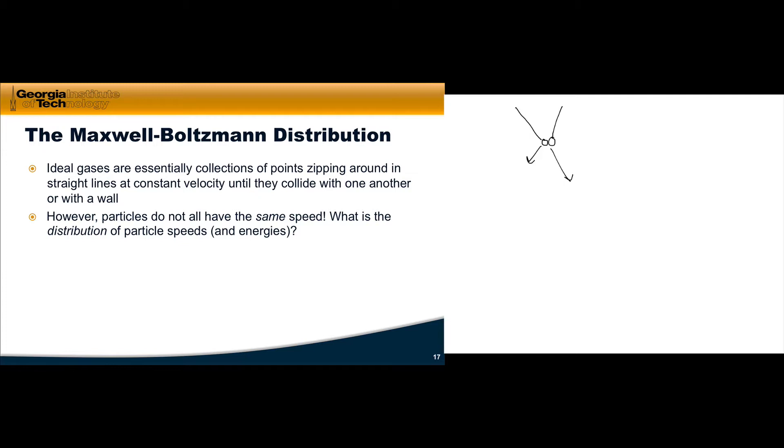What exactly do we mean by distribution? What we're looking for essentially here is something like a histogram. On the y-axis, we'll put the fraction of particles with a particular speed s. And on the x-axis, we will put speed s.